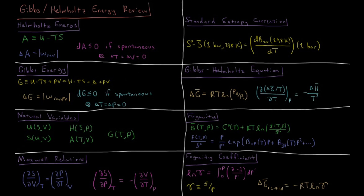The change in Helmholtz energy during a constant temperature and constant volume process is less than or equal to zero if that process is spontaneous. If you have a constant temperature and constant volume process where your Helmholtz energy increases, you'll need some external input of energy in order to make that process occur.